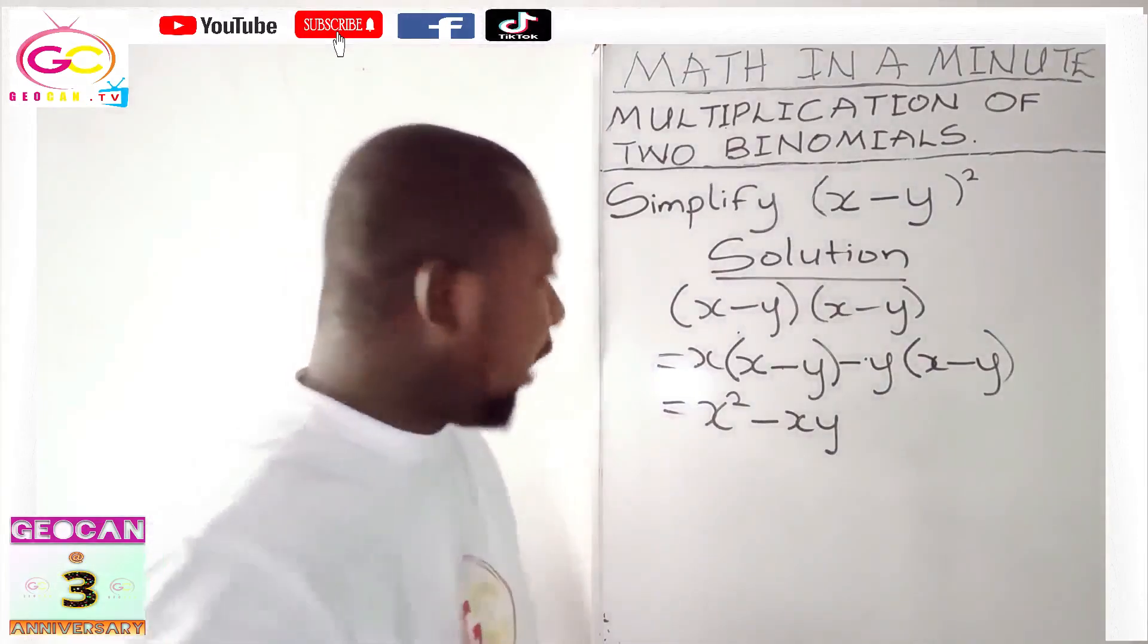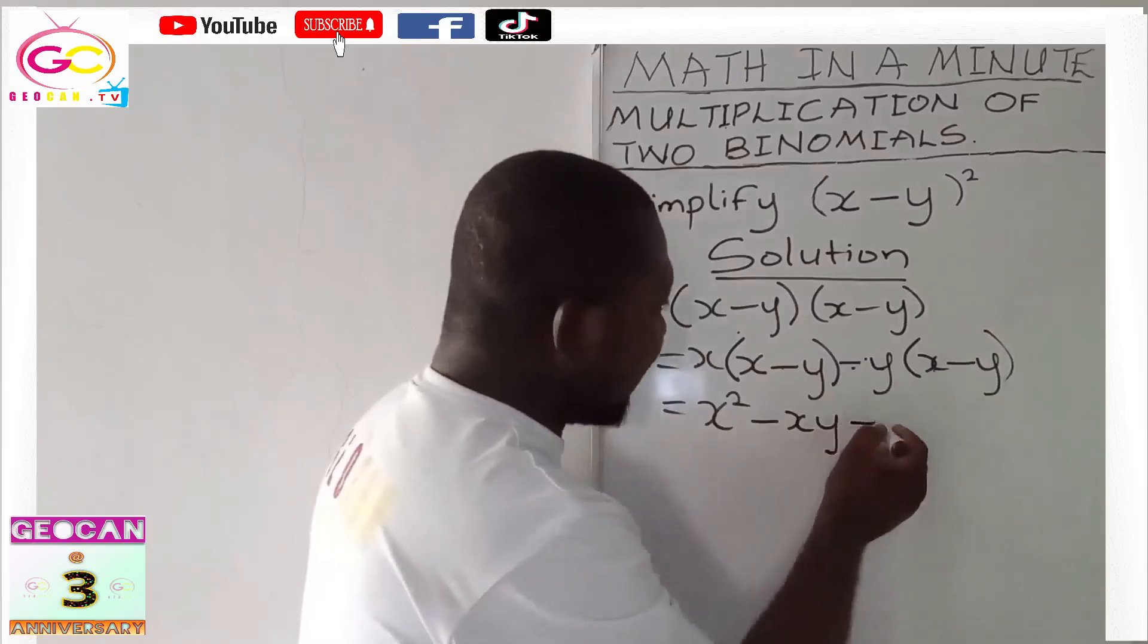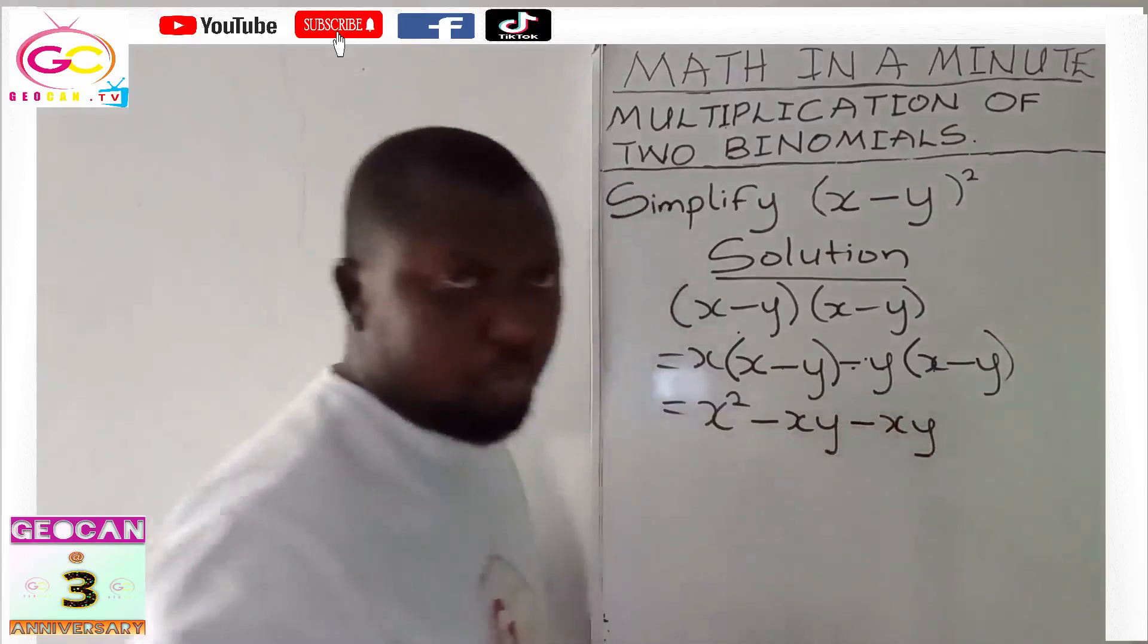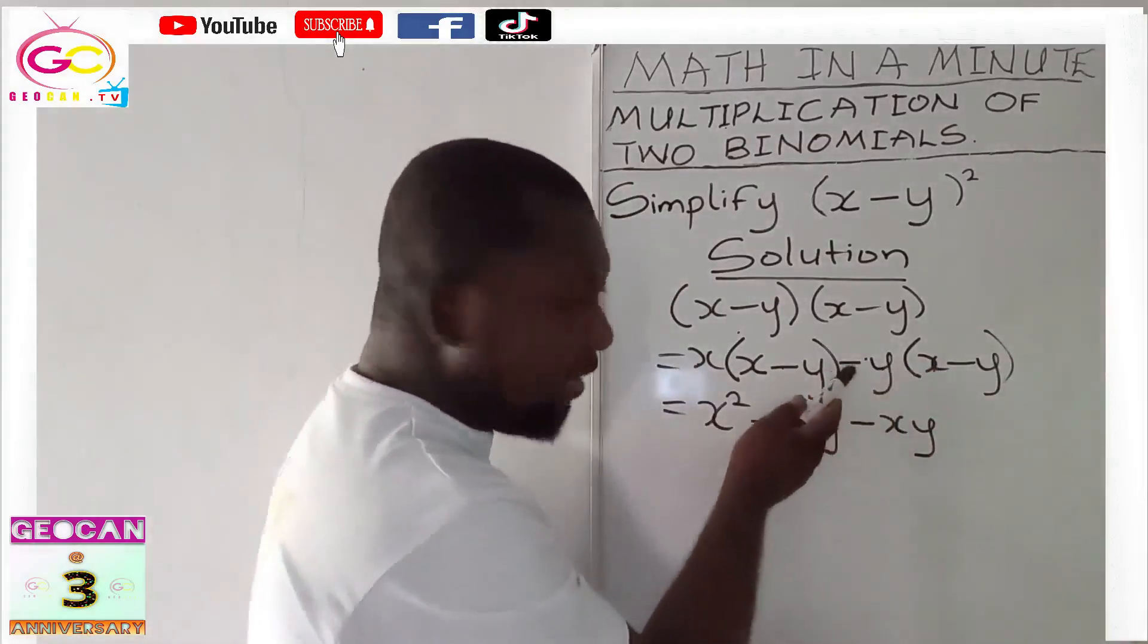We are done here. Now negative y times x gives us negative xy. Rules of algebra: anytime a negative multiplies a positive, the answer is negative. Please take note of this negative.